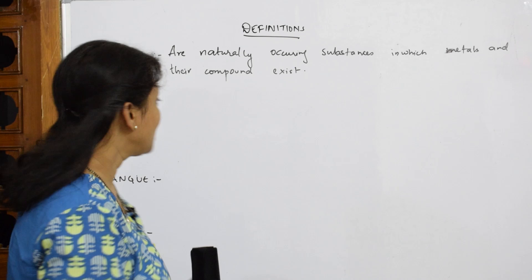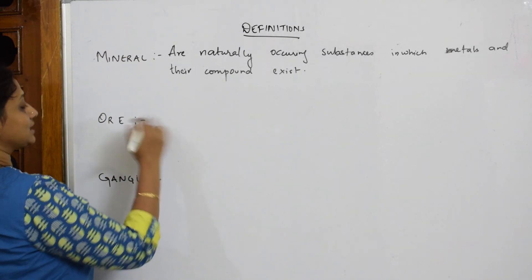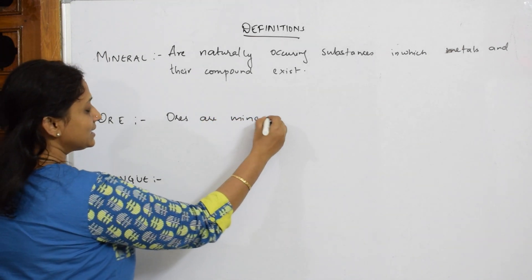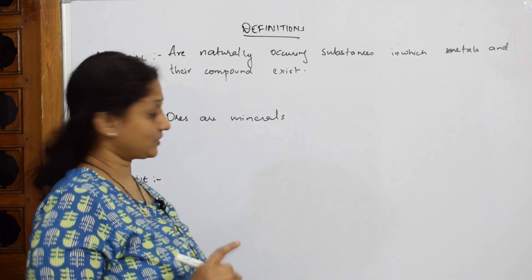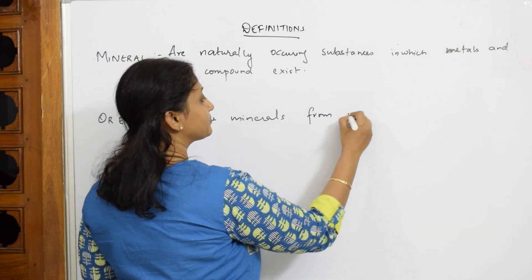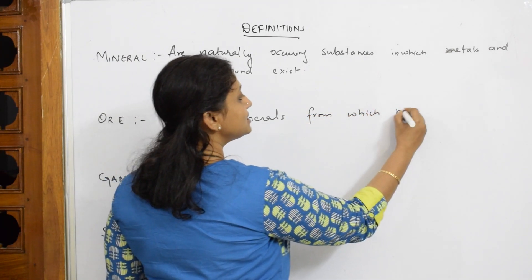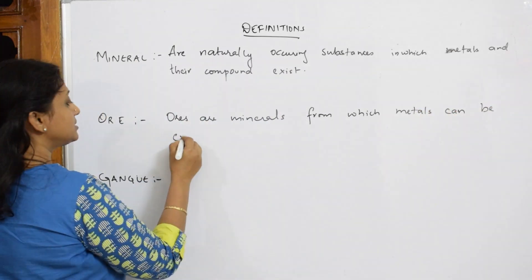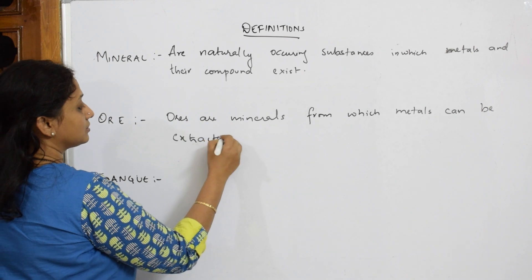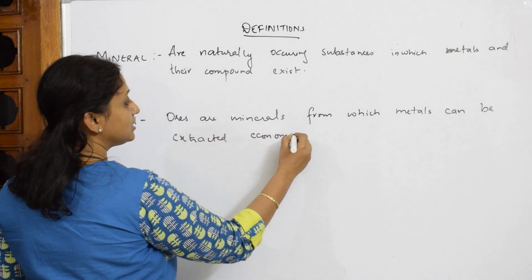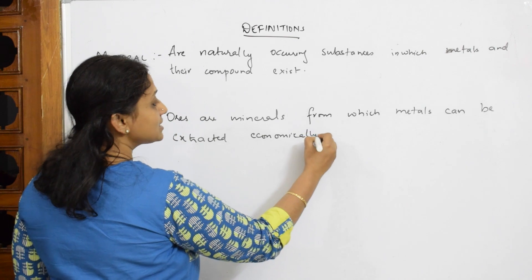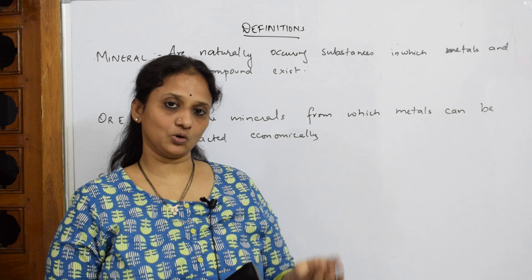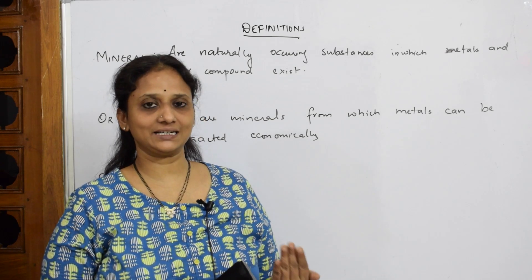Now what is an ore? Ores are minerals from which metals can be extracted economically. What does it mean economically? For example, if I require iron metal, I have to go to its ore. The ore of iron is hematite or magnetite or siderite.